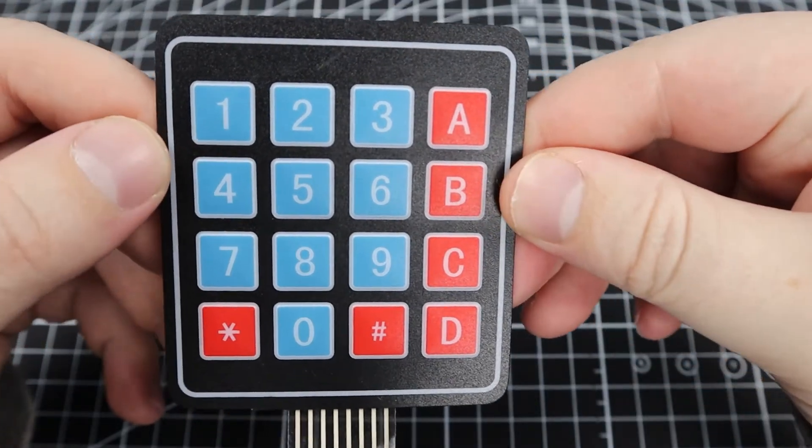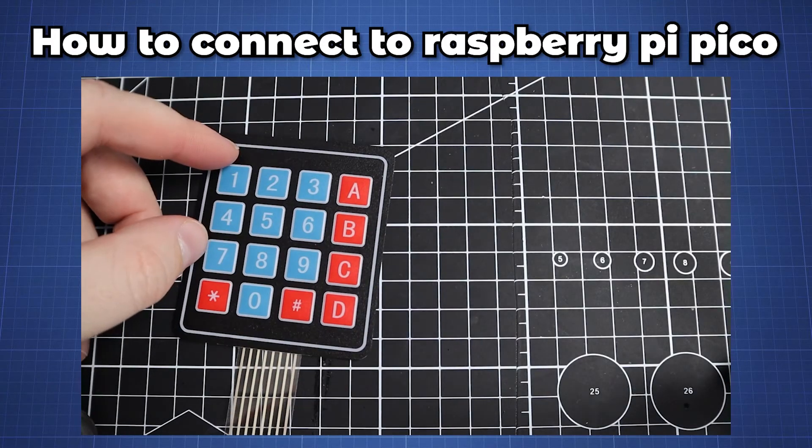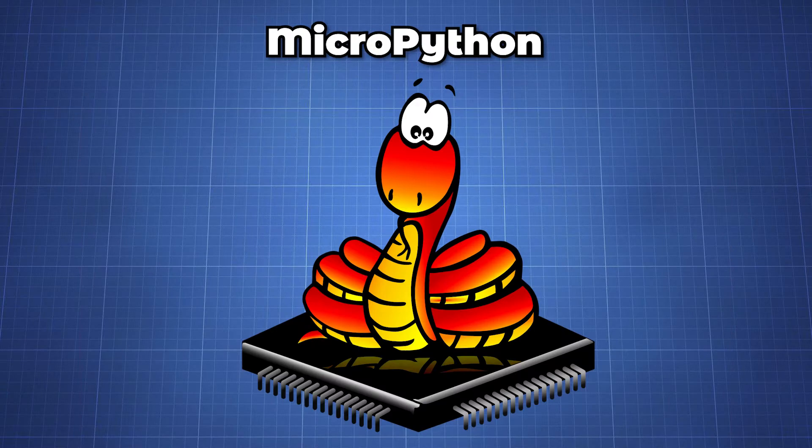In this video we will look at this 4x4 matrix keypad. We will look at how these devices work and how you can interface them with the Raspberry Pi Pico using MicroPython.